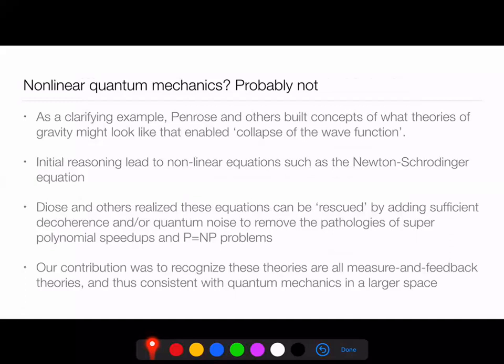Non-linear quantum mechanics is probably too strong an assumption. I particularly appreciate the role of Penrose and others looking at theories of gravity that enable collapse of the wave function, leading to non-linear Newton-Schrödinger equations. These can be rescued by adding sufficient decoherence or quantum noise. One of my small contributions is the recognition that this rescue is equivalent to measurement and feedback, making the whole thing consistent with quantum mechanics — so it's really a linear theory with some hidden degrees of freedom you're not accessing. Let's talk about what these types of theories look like.